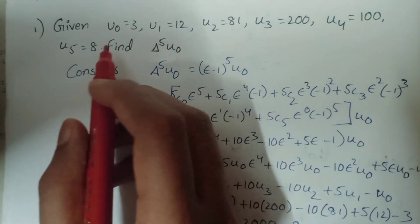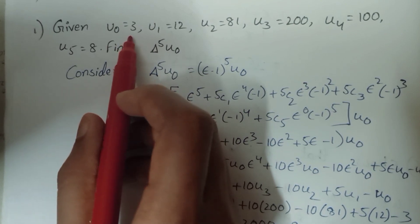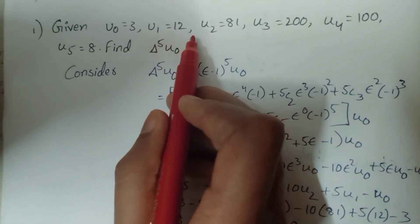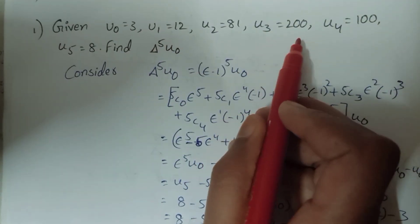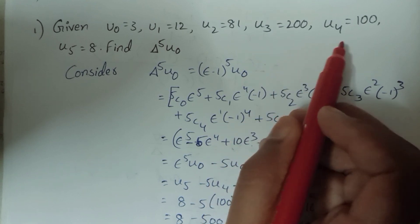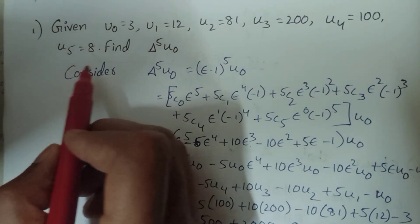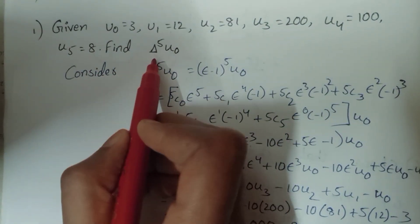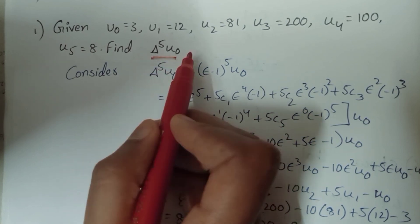First problem: given u0 equal to 3, u1 equal to 12, u2 equal to 81, u3 equal to 200, u4 equal to 100, u5 equal to 8. Find delta power 5, u0 value.